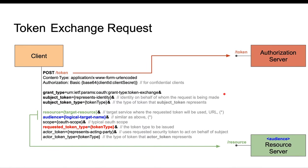So how does it work? There's a client, an authorization server with a token endpoint, and a resource server. The client sends a POST message to the token endpoint using the typical content type that includes client credentials if the client is a confidential client. There are three required parameters: the grant type — the token exchange grant type — the subject token, and the subject token type.